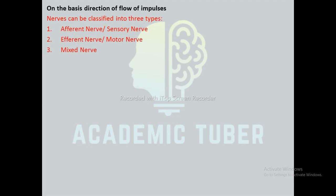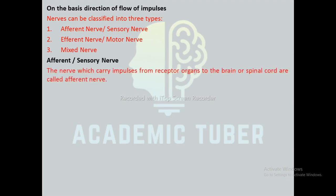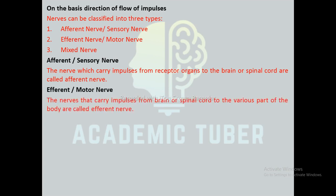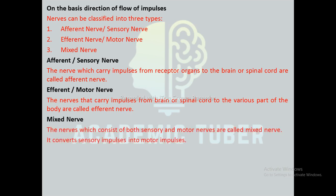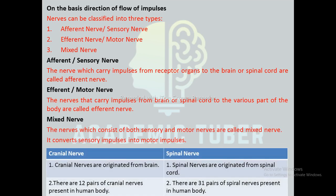On the basis of the direction of flow of impulses, nerves are classified into three types: afferent (sensory) nerves, which carry impulses from receptor organs to the brain or spinal cord; efferent (motor) nerves, which carry impulses from the brain or spinal cord to various parts of the body; and mixed nerves, which consist of both sensory and motor nerves and convert sensory impulses into motor impulses.